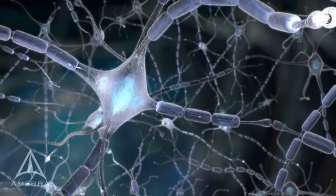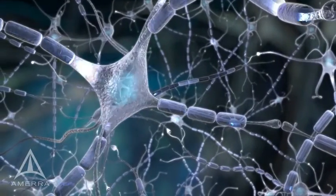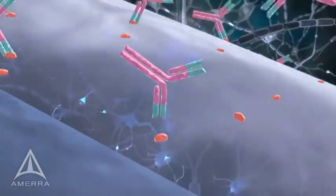These autoantibodies attack the myelin sheath, a protective coating around nerve axons that act like insulation on electrical wires.